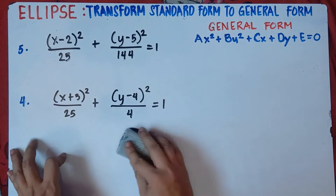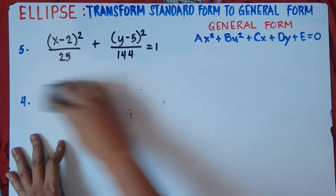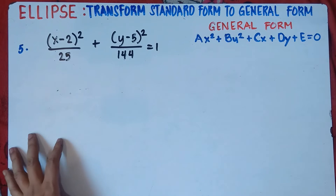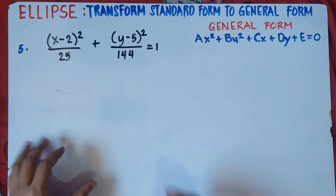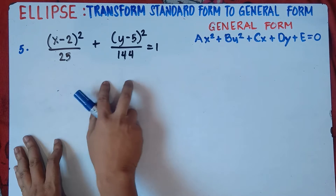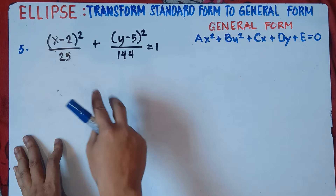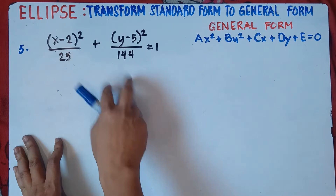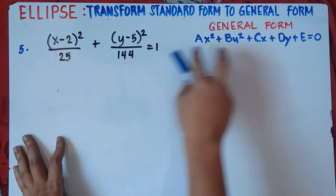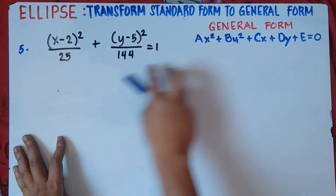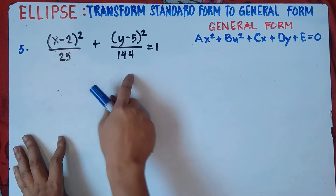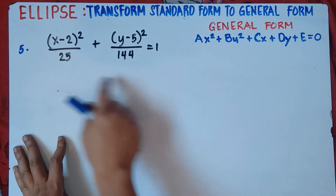Alright, so this will be Part 3 of our video. Let's start with number 5. When you're dealing with fractions, you need to eliminate the denominators to transform this one into general form. You need to remove these denominators.